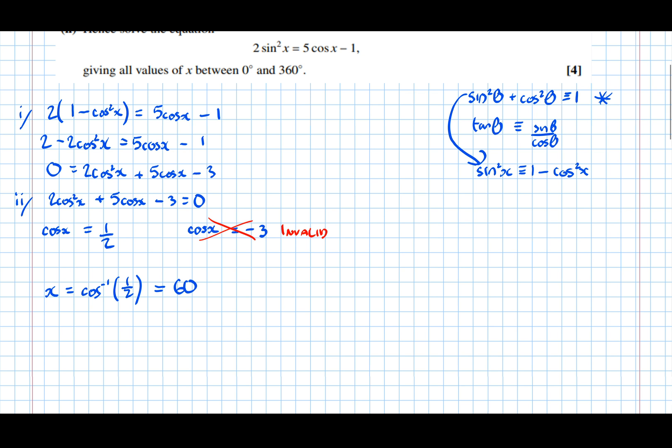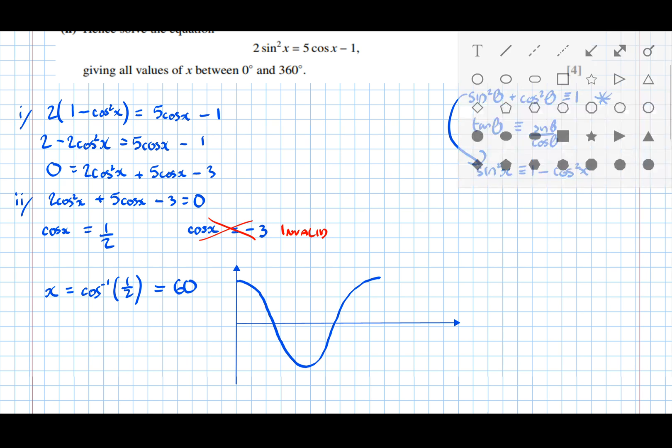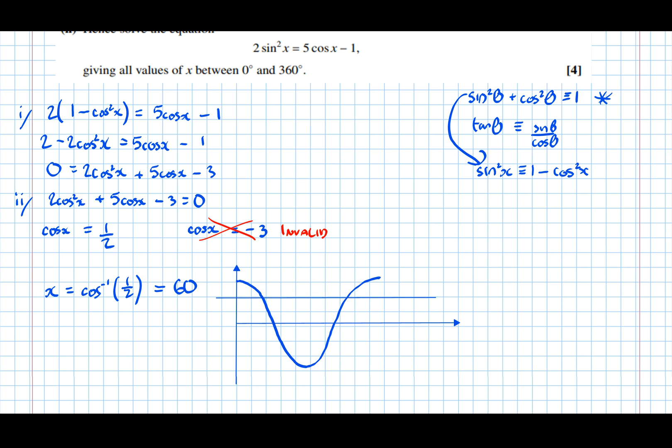So, finding all the corresponding solutions. Drawing the cos graph between 0 and 360 gives us that. And we want everything with cos of 1 half, so roughly half, let's say there. It doesn't have to be that accurate. And our first solution is here, at 60 degrees.